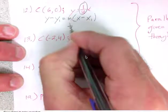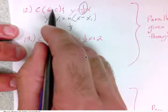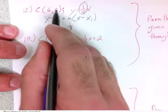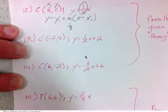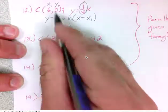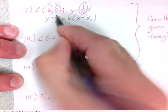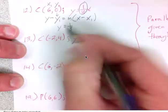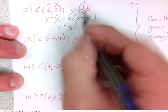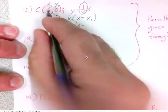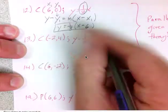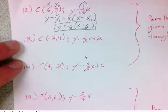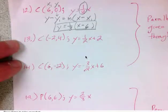For question 12, the slope is one-third. Going through point C, I substitute zero for y₁ and six for x₁. So I get y minus zero equals one-third times the quantity x minus six. That simplifies to just y equals one-third times (x minus six). That's a perfectly acceptable answer.